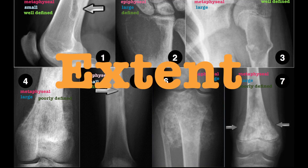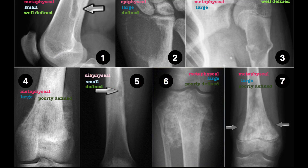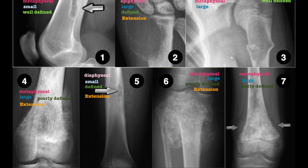E is for Extent. Think malignancy if there is evidence of extra-osseous involvement. There is likely extra-osseous involvement in figures 4, 5, 6, and figure 2, which shows some locally aggressive behaviour — there is a wide zone of transition towards the marrow and extension of the lesion to the metaphysis.